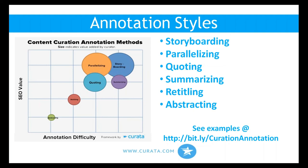There are many ways to annotate curated content: storyboarding, parallelizing by drawing analogies between two different things, extractive quoting, paraphrasing and summarizing long articles into a 'too long, didn't read' version, retitling content like Matt Drudge does to make it more relevant for your audience, or pulling abstracts from deeper in the content that are more interesting than the opening sentences. There's a bit.ly link in the slides with a blog post showing examples of each of these annotation methods.